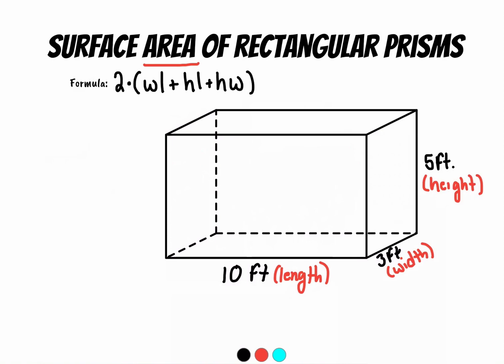So the way you can calculate this is using the formula over here. Two times, in parentheses, width times length plus height times length plus height times width. So we're going to talk about why each of those numbers is there using this rectangular prism.